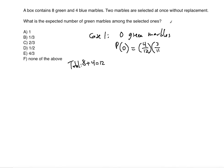Why 11? Because it's without replacement — we discount the one we already chose. So 3 divided by 11. And why do we multiply? Because the two chosen marbles are independent of each other, that's why multiplication is involved. So simplified: 4 over 12 equals 1 third, times 3 over 11, giving us 1 over 11.